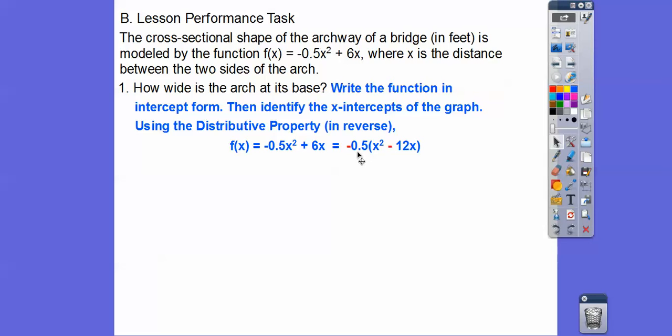Imagine if I just distributed this negative back through. -0.5 × x² = -0.5x². And then -0.5 × -12, well, 0.5 is half, so half of 12 gives us this 6. And then this negative times the negative equals a positive. So you see how we wrote that? And then now let's pull an x out of both of these. So here we're going to pull that x out. And then let's write it as x - 0 so we can see the x-intercepts. The x-intercepts are at 0 and 12 right there. Are you guys with me?